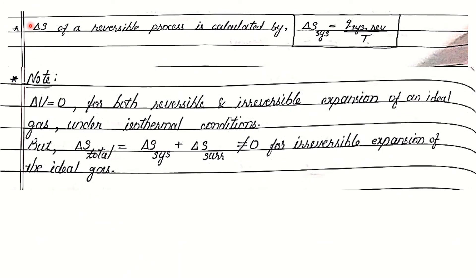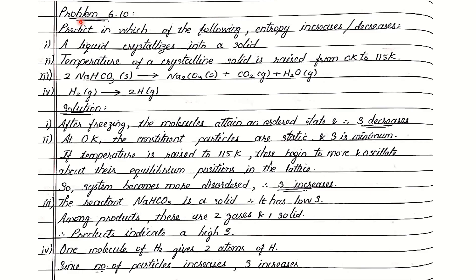We can calculate the change in entropy of a reversible process by the relation delta S system equal to Q system reversible divided by T. This means the entropy change of a reversible system equals the amount of heat supplied to the system during the reversible process at a particular temperature. Note that while internal energy change of a system is zero for both reversible and irreversible expansion of an ideal gas under isothermal conditions, the total entropy change for irreversible expansion of an ideal gas will not be equal to zero.